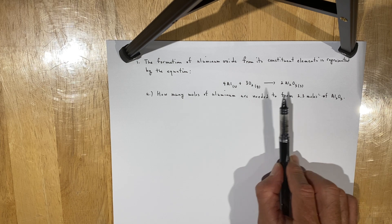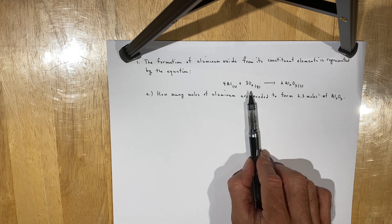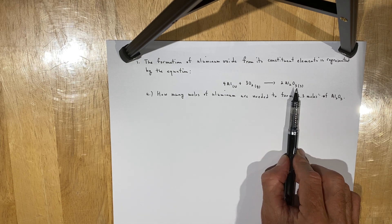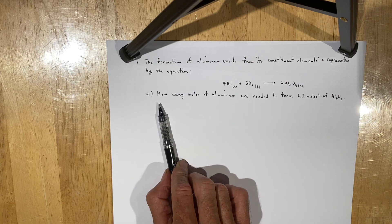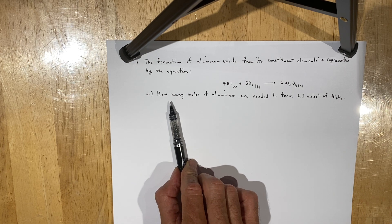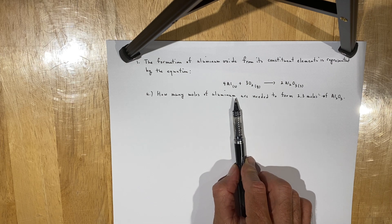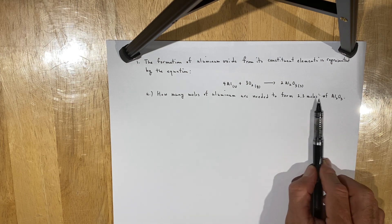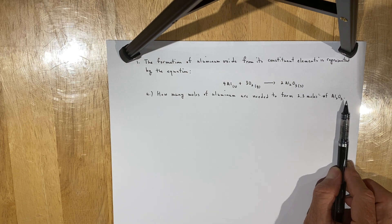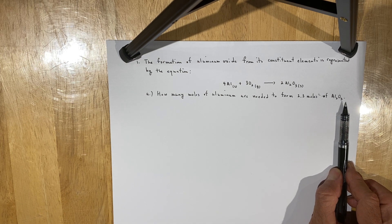An understanding of these mathematical relationships is key to solving this problem, which reads: how many moles of aluminum are needed to form 2.3 moles of aluminum oxide?